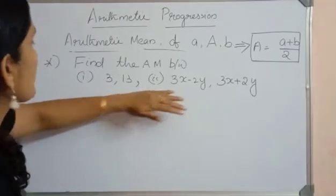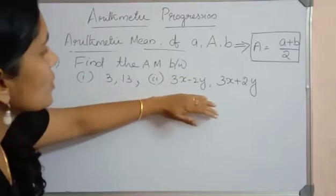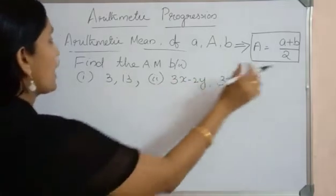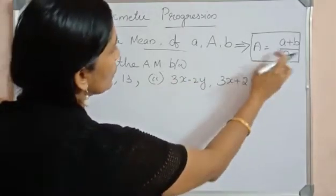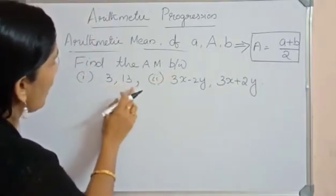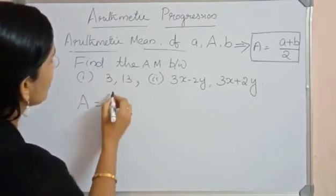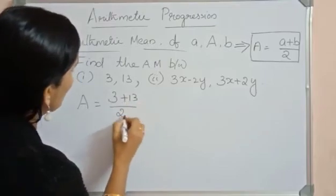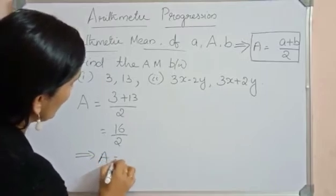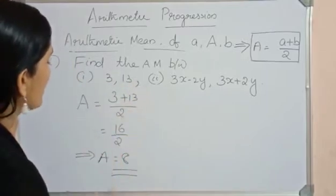Now look at these two questions: find the arithmetic mean between 3 and 13. Using the formula A equals (A + B) / 2, the arithmetic mean between 3 and 13 is A equals (3 + 13) / 2, which equals 16 / 2, so A equals 8. This is how we find the arithmetic mean between two terms.